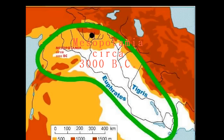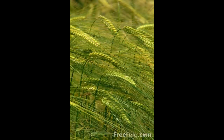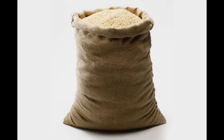In Mesopotamia, circa 3000 BC, a circle was used as a unit of barley. In feudal Japan, the trade system was based on the koku, a unit of rice per year.